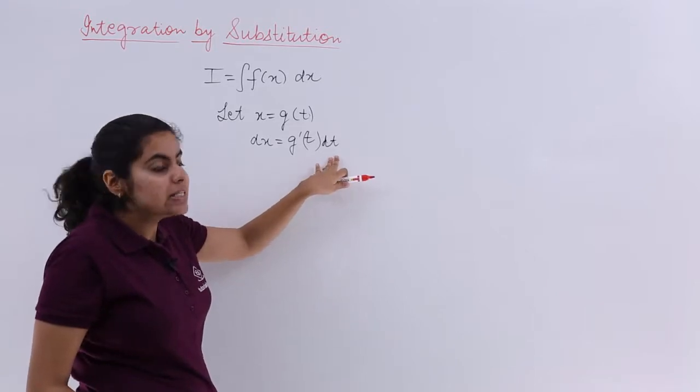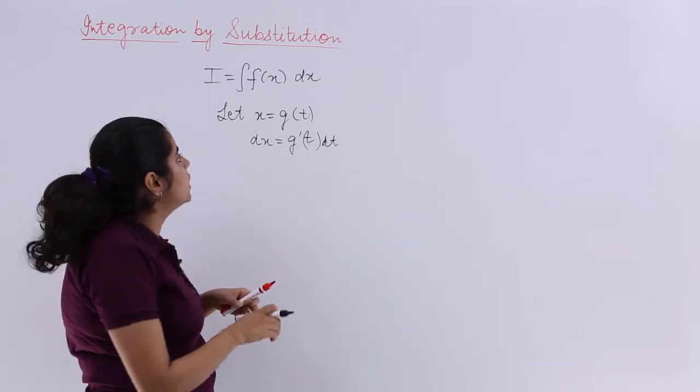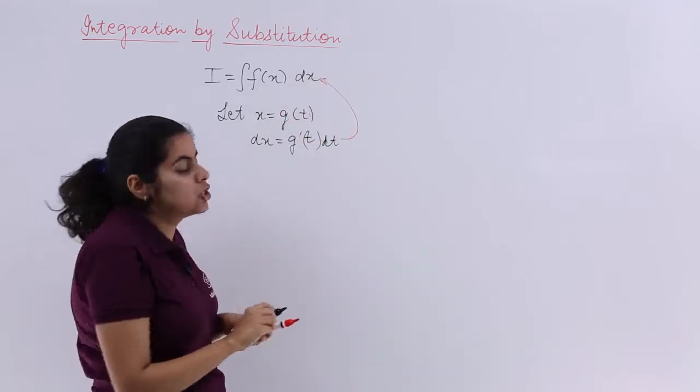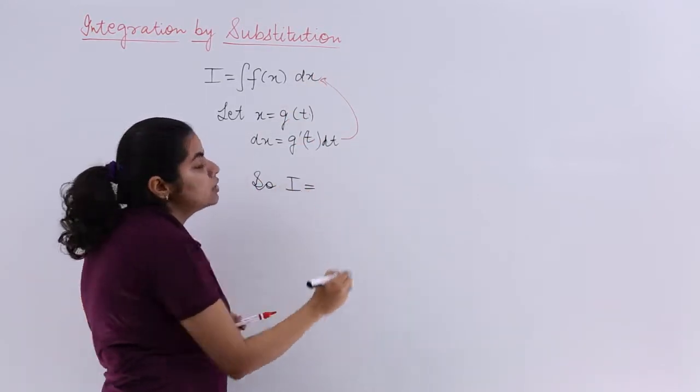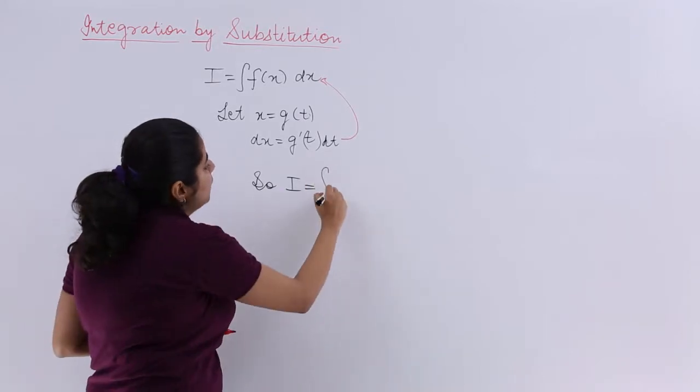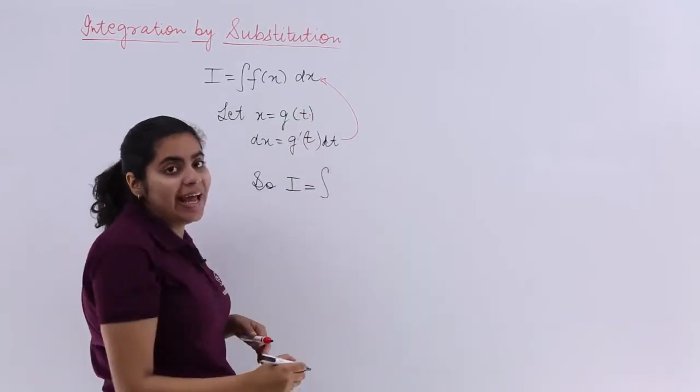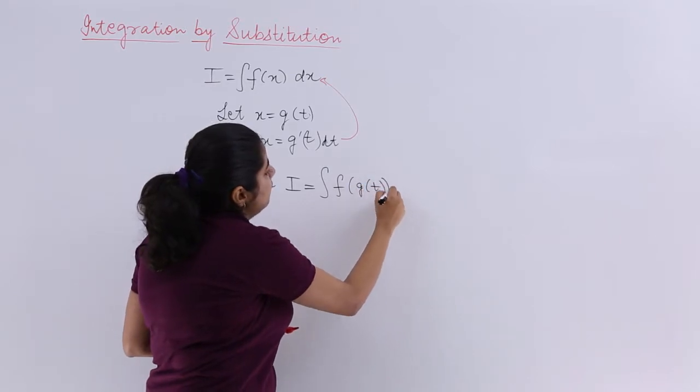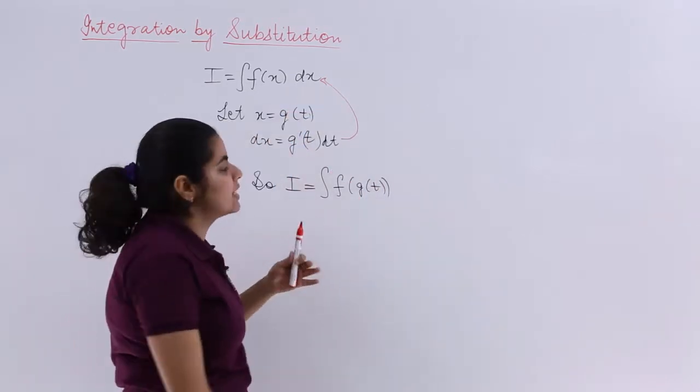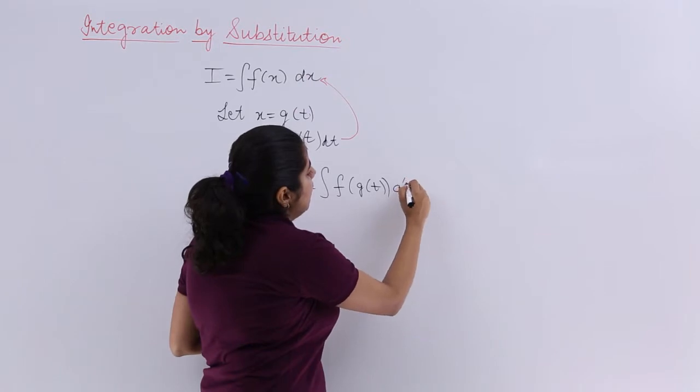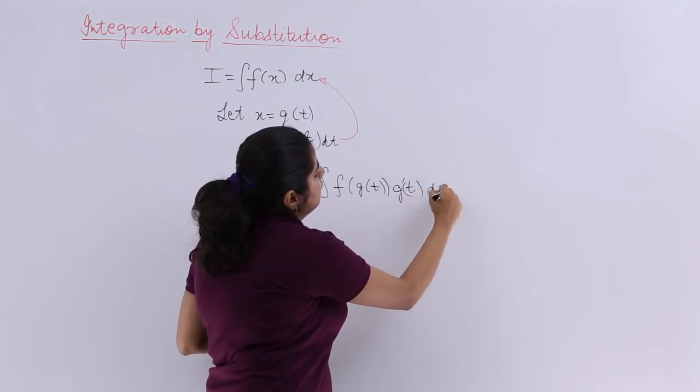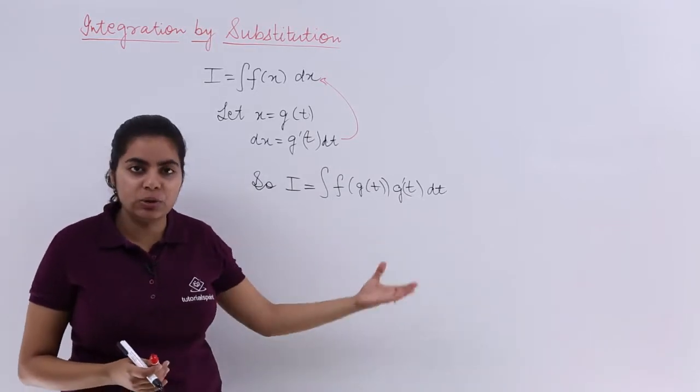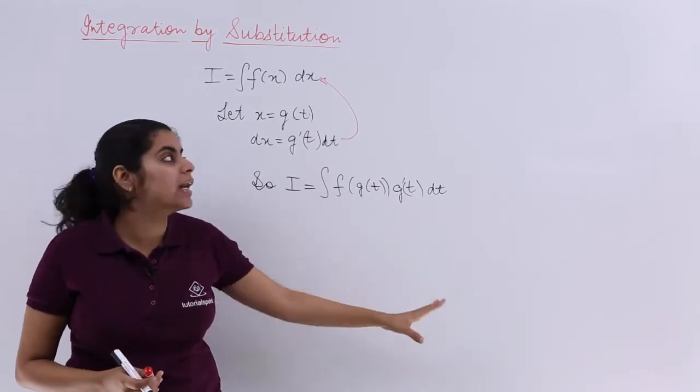Now what will you do? Since everything has changed to t, you will basically substitute this value in the given expression. So now your integration that you have to evaluate would become ∫f(x)dx, which would be ∫f(g(t))g'(t)dt.